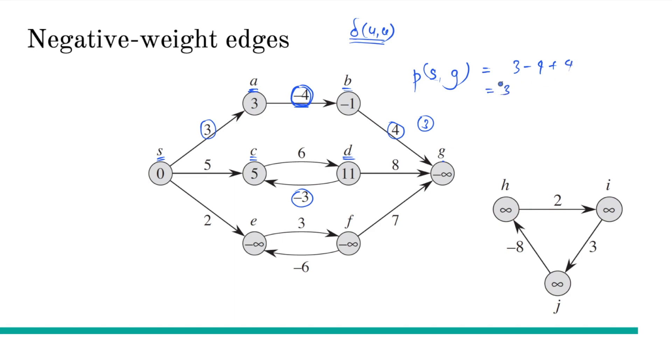Now there are some shortest path algorithms, for example Dijkstra's algorithm, that assumes that all the weights are positive, but that's a limitation of an algorithm. Even if some weights are negative, the problem of finding the shortest path still remains a valid problem. However, a graph can have something known as a negative-weight cycle.